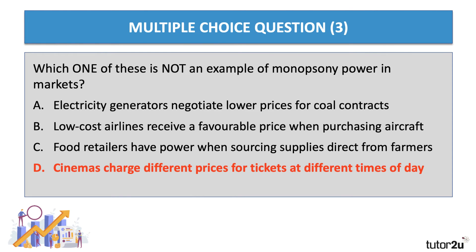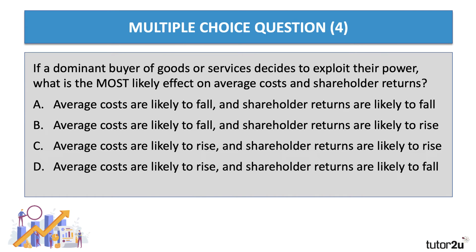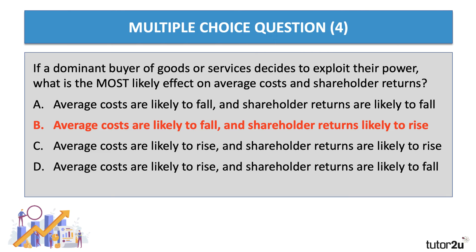Two more questions to go — here's question four. If a dominant buyer of goods and services decides to exploit their power, what is the most likely effect on average costs and shareholder returns? Press the pause button and then press play when you want to go through the answer and the explanation. Interesting question — dominant buyer, monopsony. Well, I think the answer is B. Average costs will come down — the cost of purchasing raw materials and supplies has come down, bringing down variable costs, which lowers average and marginal costs. And other things being equal, as you can visualise from the diagram in video two, a fall in costs will lead to a rise in supernormal profits. The returns to shareholders, perhaps in the form of extra dividends, are likely to go up.